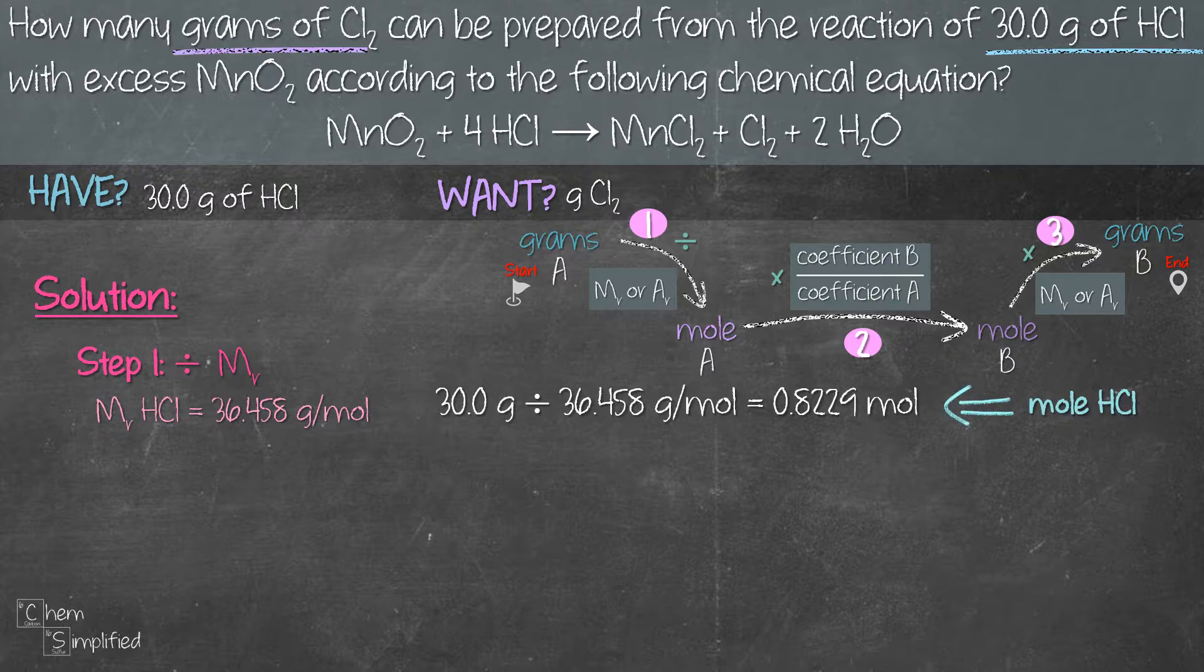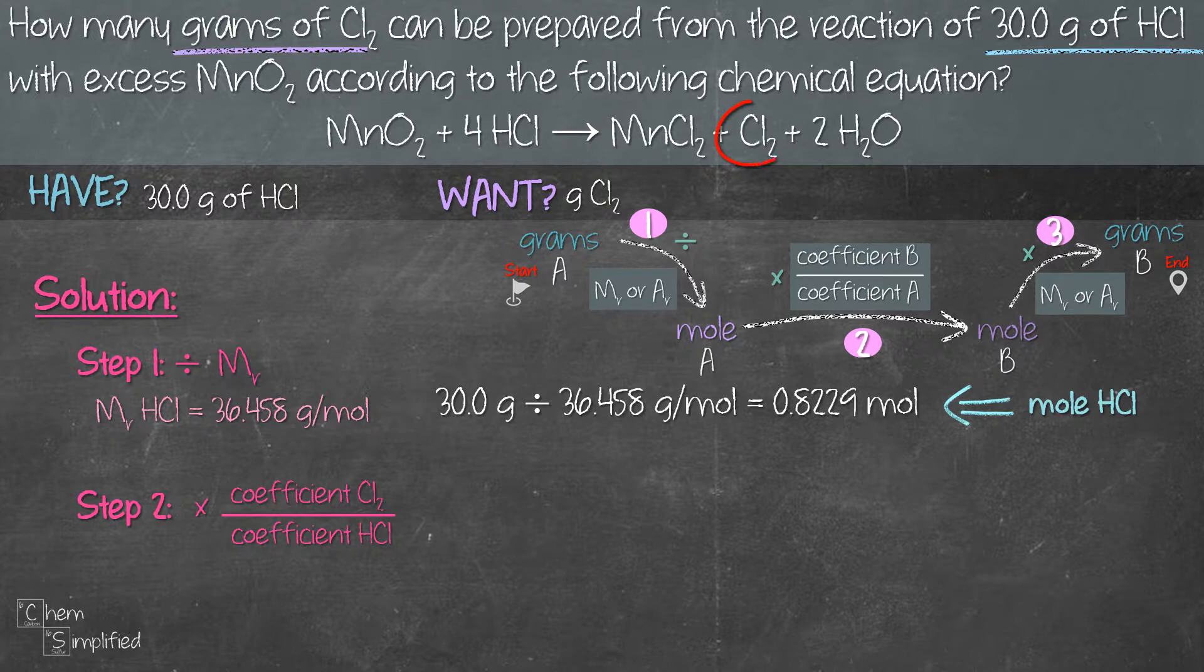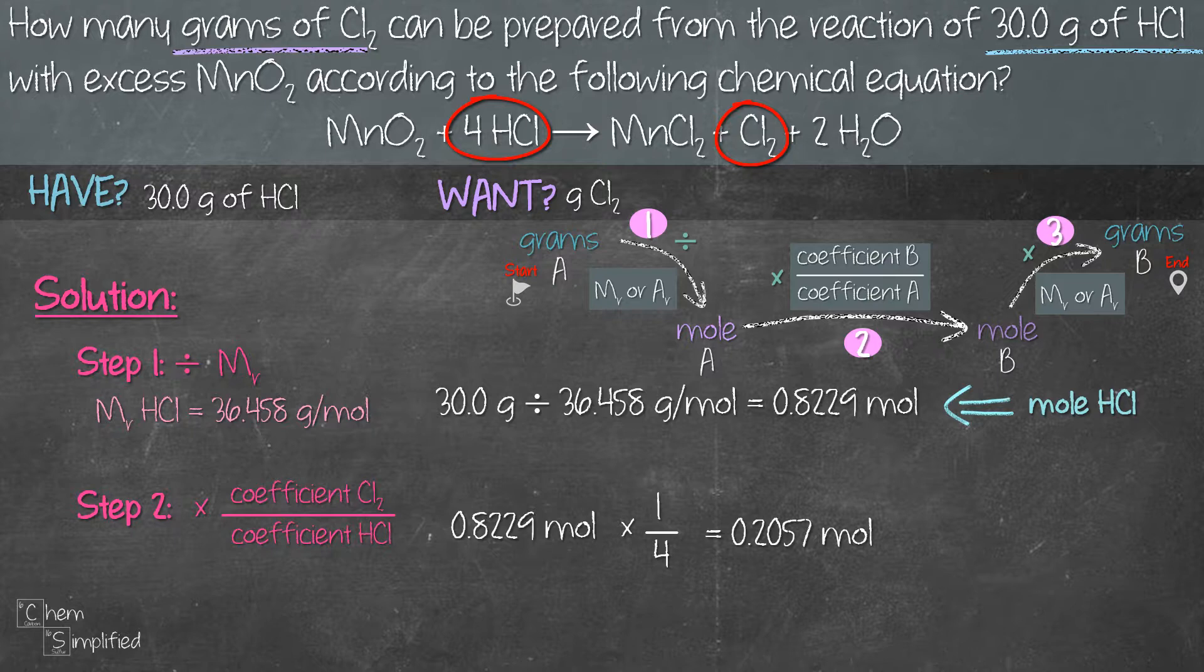Moving on to the second step, we're supposed to multiply what we got from step 1 with the coefficient ratio. So from the balanced equation, coefficient B is the number in front of Cl2, which is 1. Coefficient A is the number in front of HCl, which is 4. So we take 0.8229 mole and we multiply with 1, divide by 4, and that gives us 0.2057 mole.